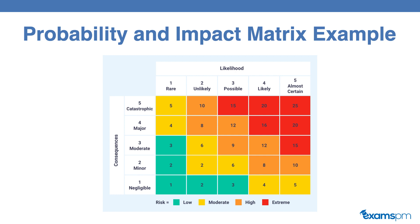If a risk has a consequence rating of five and a likelihood rating of five, that gives this risk an overall score of 25, and you can see that it is in red, which means this is an extreme risk. Based on the colors we can group risks as low, moderate, high, and extreme. Low is green, yellow is moderate, orange is high, and red is extreme. This allows us to categorize all of our risks by giving each a severity rating as well as a likelihood rating. The definitions we come up with for probability and impact remain the same throughout our project.